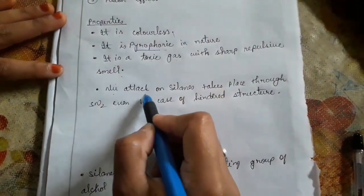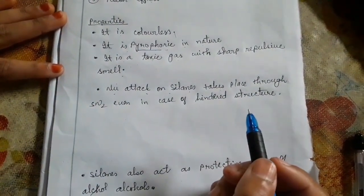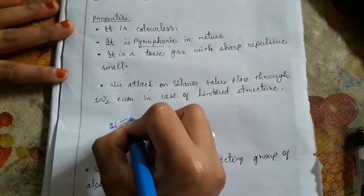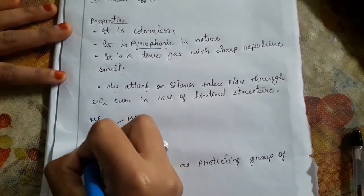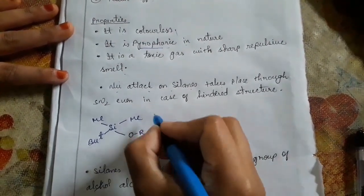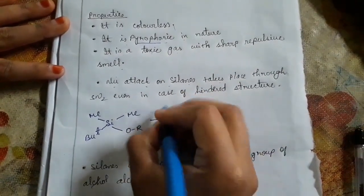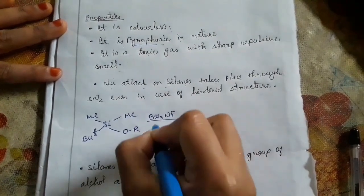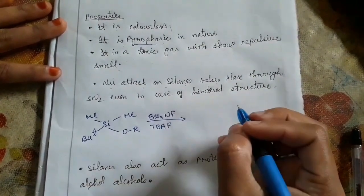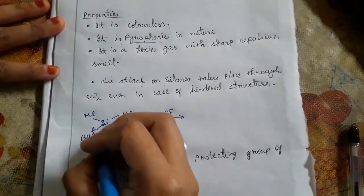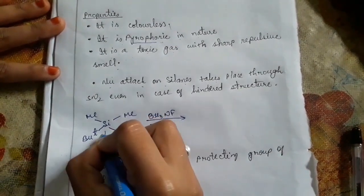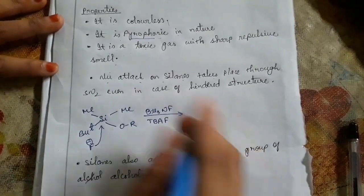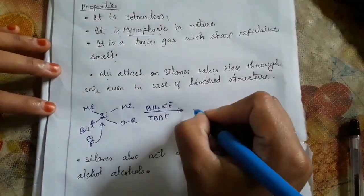The fourth property is that nucleophilic attack on silane takes place through SN2 even in the case of a hindered structure. For example, here we have a hindered compound. When we react this with tributylammonium fluoride, the fluoride can attack on the hindered side because the carbon-silicon bond is longer than the carbon-carbon bond, so it can even attack on the hindered side. And we get a pentavalent intermediate.